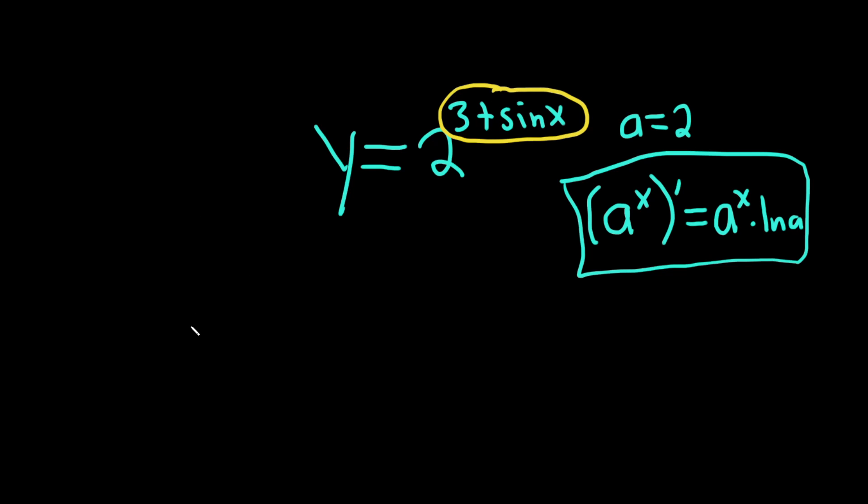So what we'll do is we'll use the chain rule. So y' is equal to, the chain rule says that you take the derivative of the outside and you leave the inside untouched. So the derivative of the outside is going to use this formula here, except it's 2. So it'll be 2 to all of that stuff. That's the inside function. Then we still have the ln2.